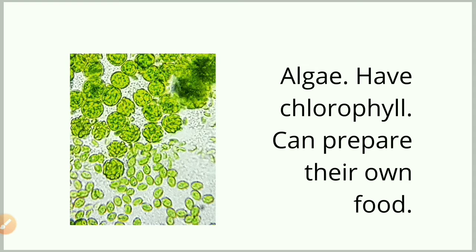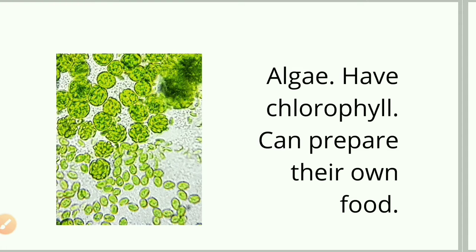Here is an interesting thing — you can see in the picture a green dot-like thing. These are called algae. Algae have chlorophyll; they are not exactly like the trees or plants we usually see around us. You can see them in water, in a pond, or even at the bottom of an old water tank where green things grow. These algae have chlorophyll, so they are plants — they can prepare their own food and do photosynthesis.